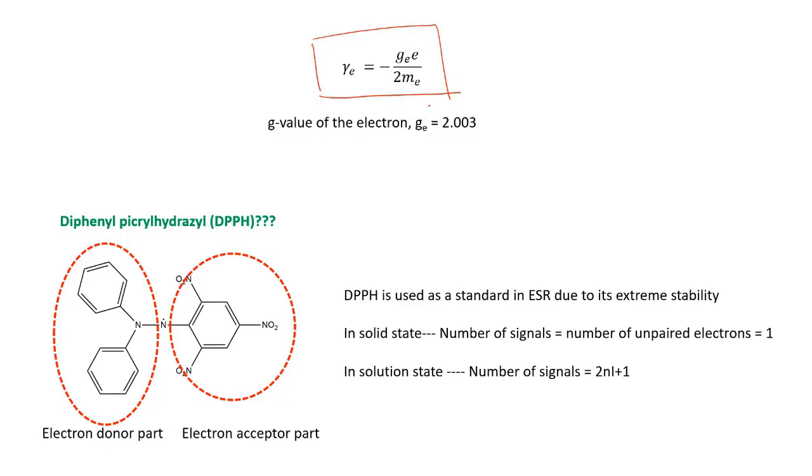From this, the G value is a constant which is already calculated as 2.003. So here itself our first answer we got: the value of g is 2.003.